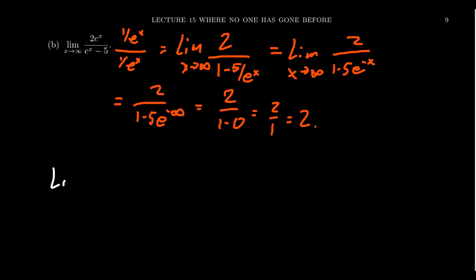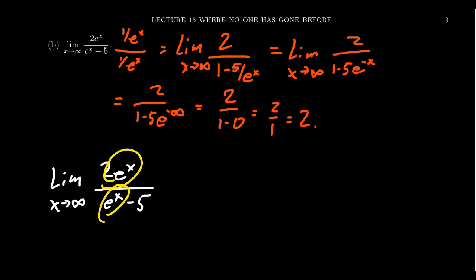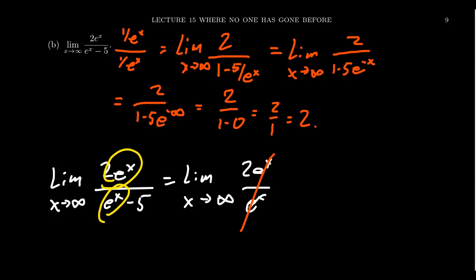Personally, I prefer a simpler approach: think about which is the fastest-growing term. In the numerator the fastest-growing term is 2e to the x; in the denominator it's e to the x. So as x goes to infinity, only the leading terms matter — 2e to the x over e to the x — the e to the x terms cancel, and the limit turns out to be 2. This mechanic works each time, much like reusing the quadratic formula after deriving it once.